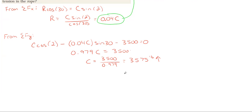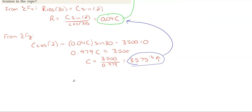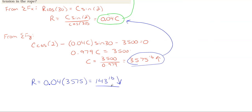What the problem was really asking for was the rope force. Now that we have the cable force of 3,575 pounds, we can plug it into R = 0.04C to get the rope force. So R = 0.04 × 3575 = 143 pounds in the downward-right direction. As expected, the rope force is much smaller than the cable force and the car's weight, since a person more than likely can't pull with thousands of pounds of force.